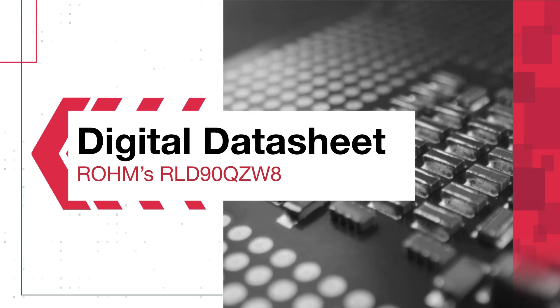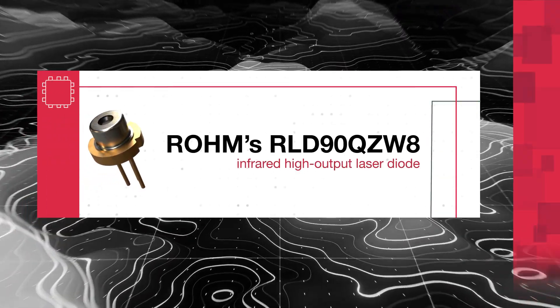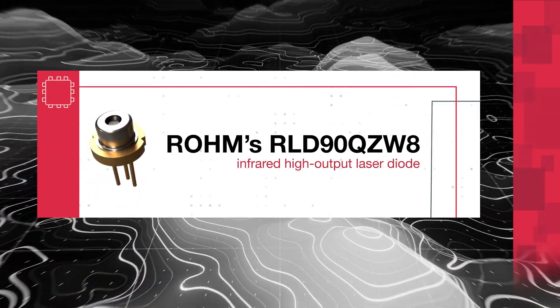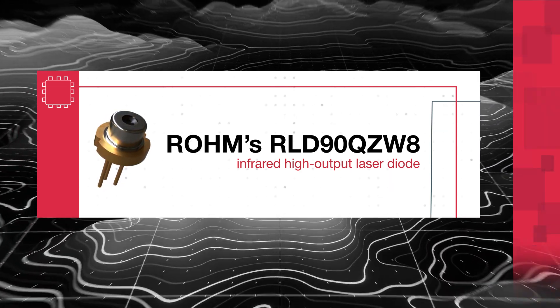ROHM's RLD90QZW8 is a 120-watt infrared high-power edge-emitting laser diode developed for time-of-flight or TOF in LiDAR application. The product is conveniently packaged in a standard TO56 can.